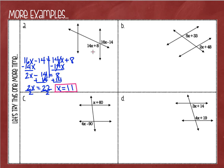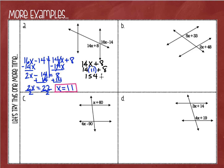Is 11 what the angle equals? Absolutely not — these angles are clearly not only 11 degrees, that would be too small. So let's pick one. I'll do 14x plus 8 and replace x with 11. Here's where your calculator might come in handy: 14 times 11 gives us 154, and then I'm going to add 8 to that.